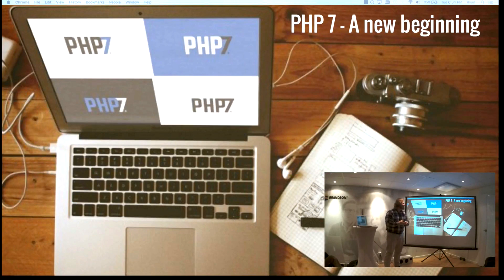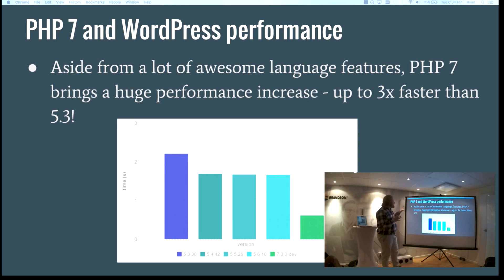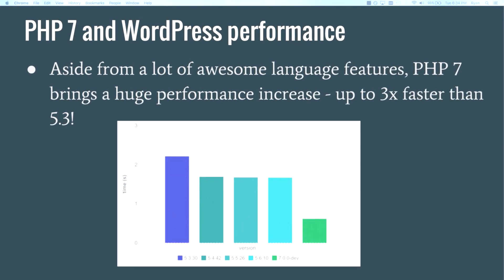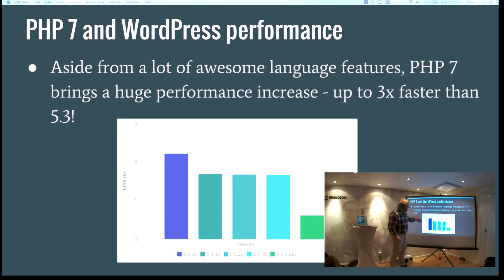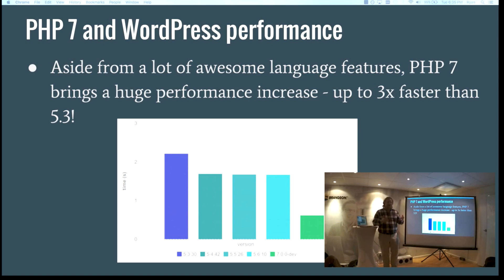Enter PHP 7 — a new beginning. There are a lot of awesome language features that I'm not going to cover here, but there are great posts about them. What I'm going to talk about is speed. They've basically rewritten the virtual machine that runs PHP, and it's so much faster. Here's an example graph — this is not WordPress, this is a benchmarking application. The y-axis is time, so bigger is worse. PHP 5.3 takes about two and a half seconds. On the very right, PHP 7 takes something like 600 milliseconds — about three times faster. Nothing like this has been done in the history of PHP ever. We thought there was a big jump between 5.3 and 5.4, but that was nothing compared to this.